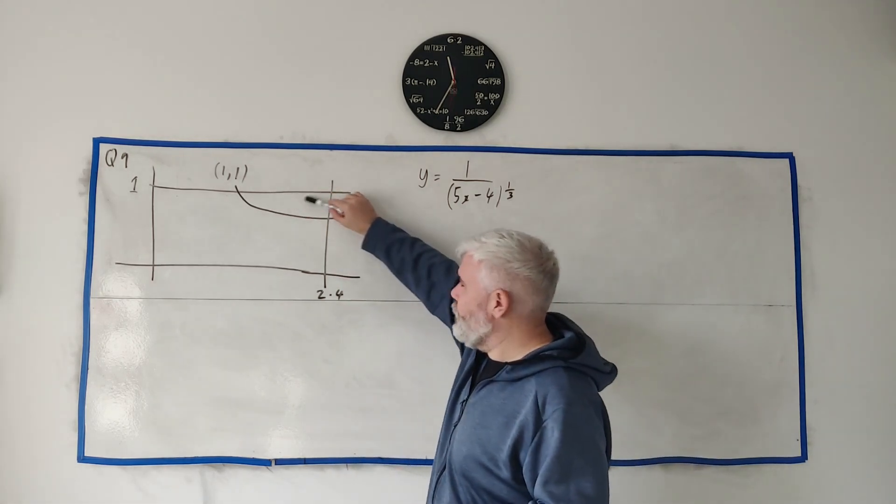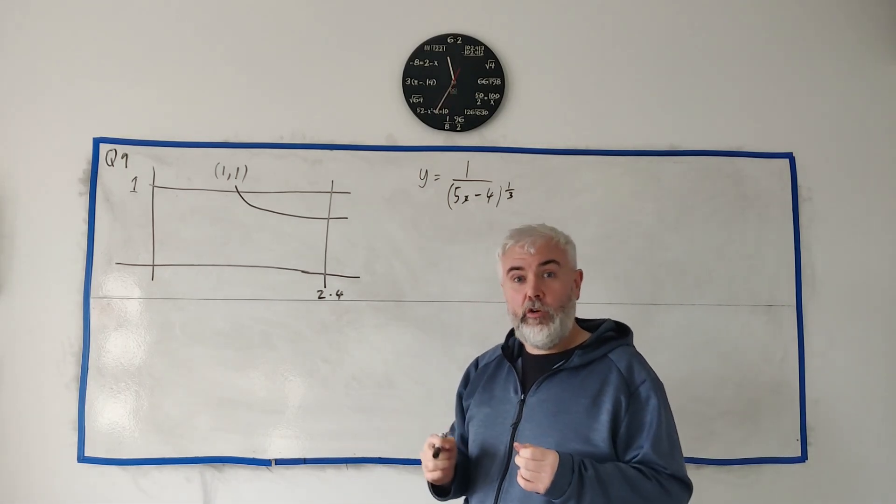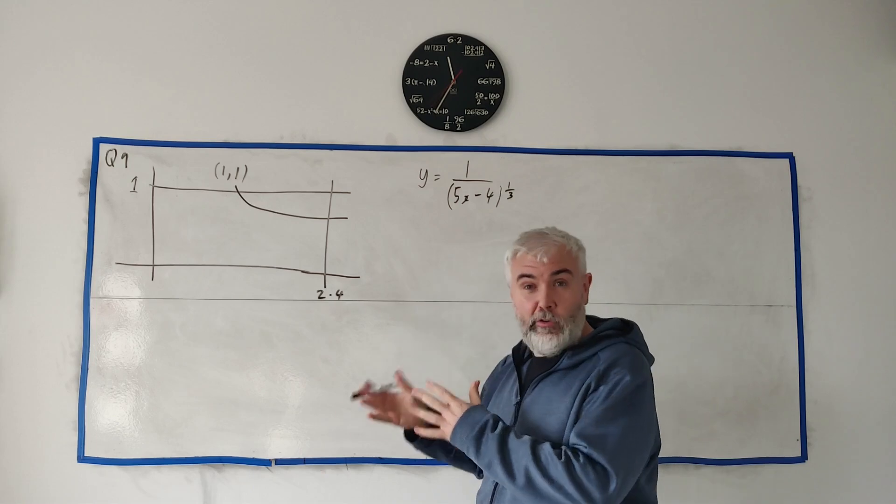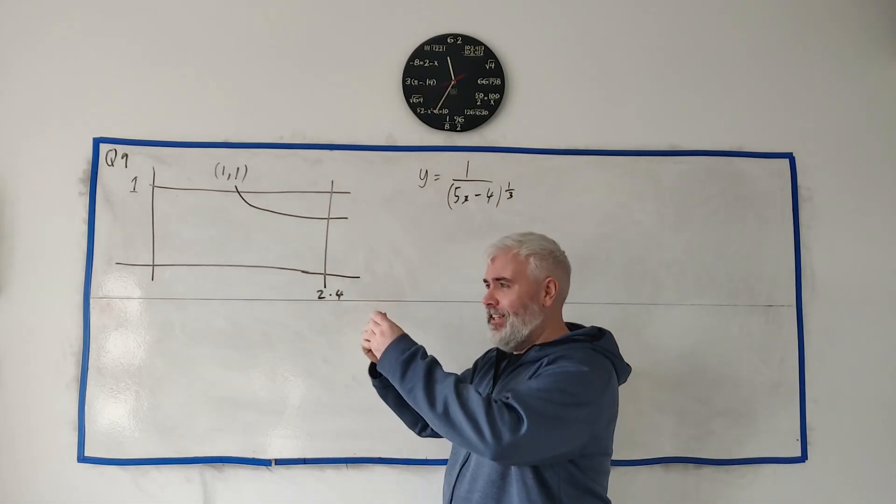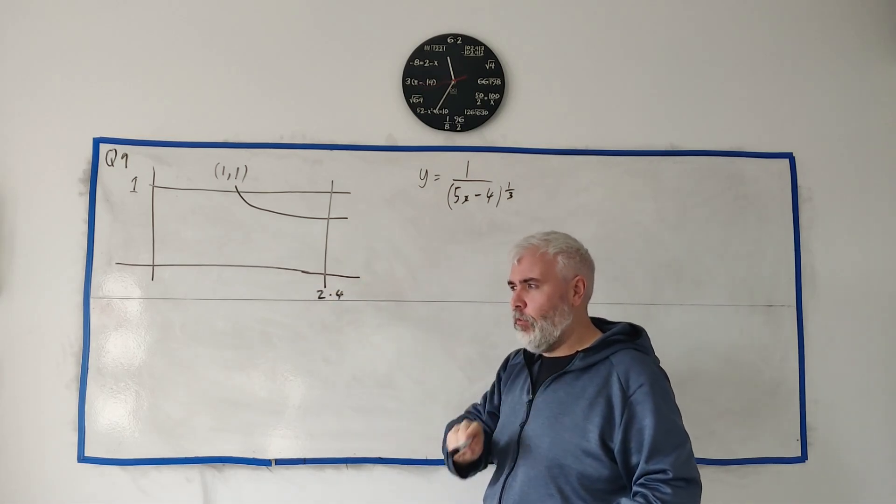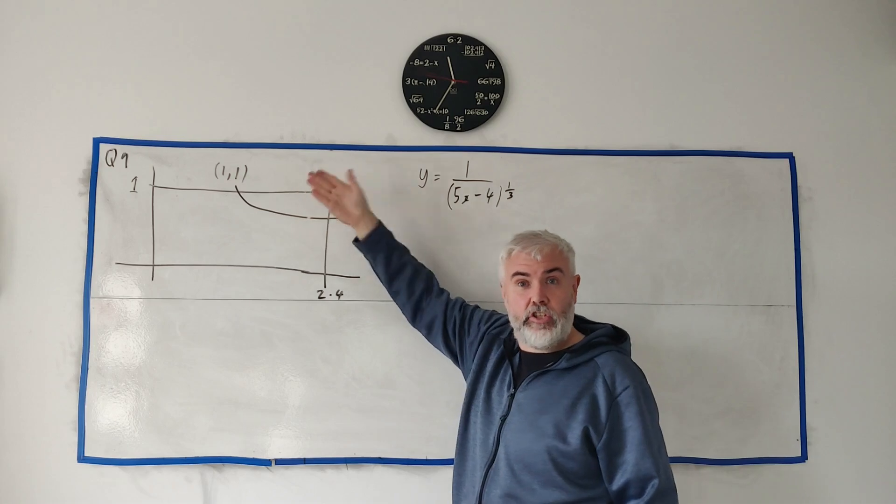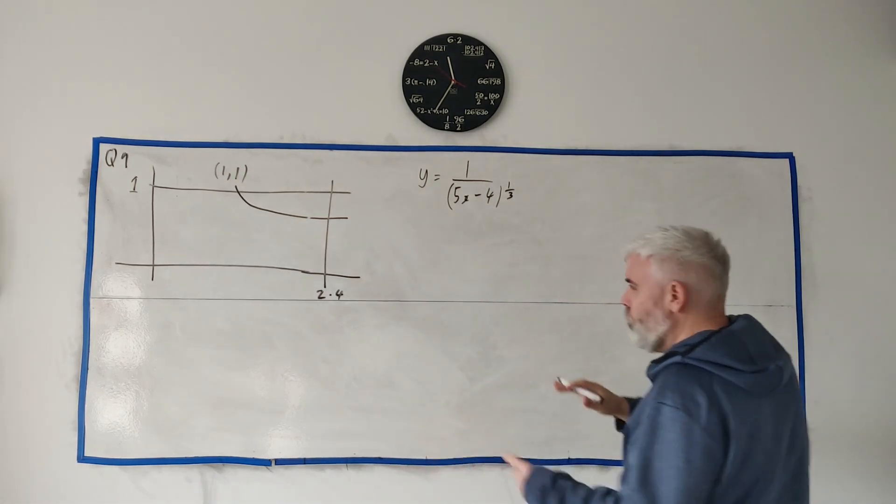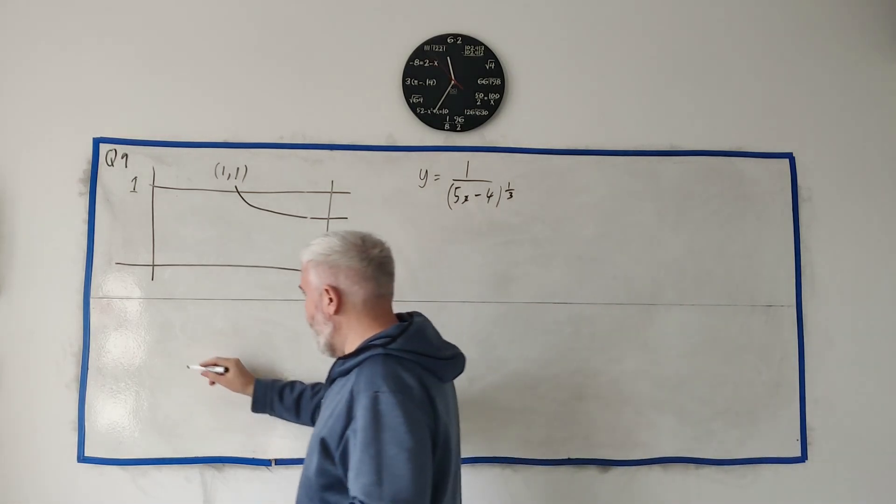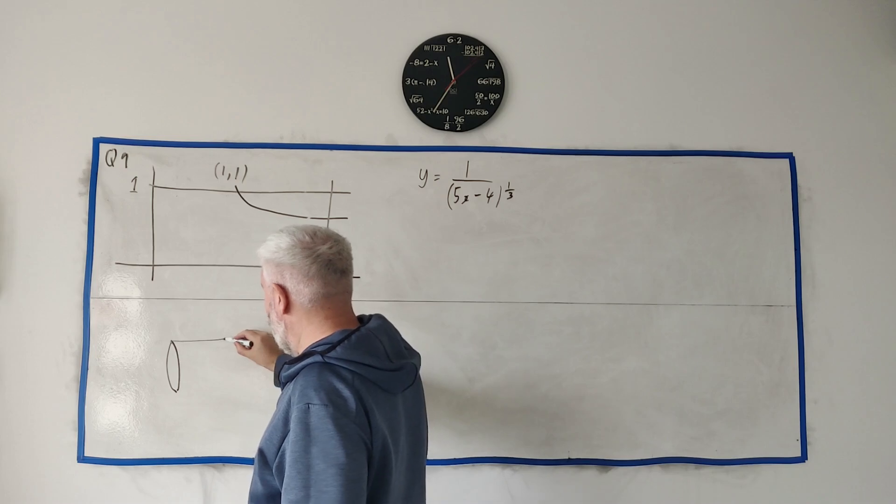So they've shaded in this region here and they tell us that they want the volume of the solid generated if we rotate that around. So the idea is this is sitting in space and we rotate it around and everywhere this shaded area touches turns into a solid object. So I'm going to try and draw it out.